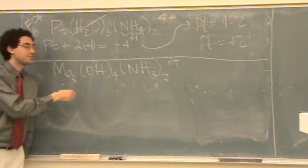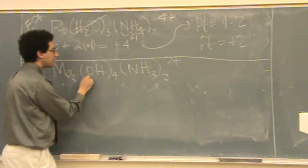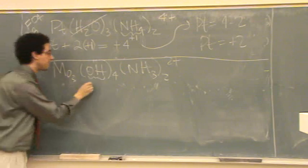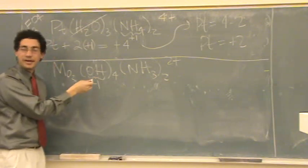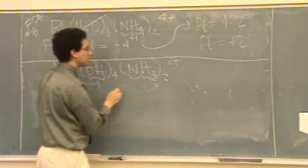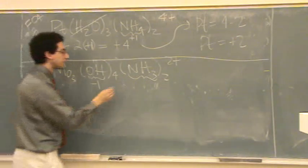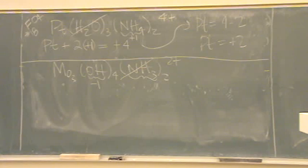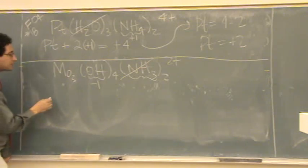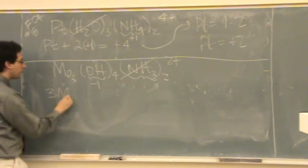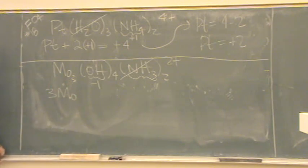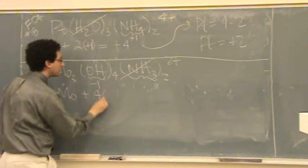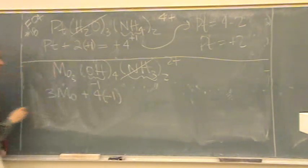So we're going to do the same thing down here. What's the hydroxide charge? Minus one. And then how about ammonia? Zero. Yeah, NH3 has a charge of zero. Forget that. It's just adding two zeros, which are not helpful at all. So we'll just say three molybdenums plus four hydroxide at minus one.